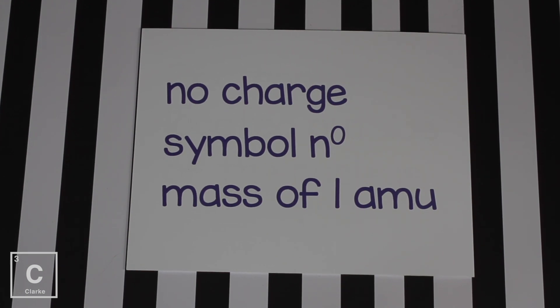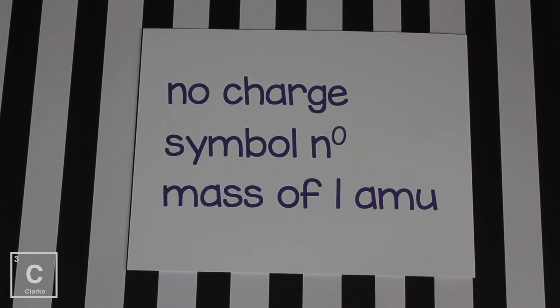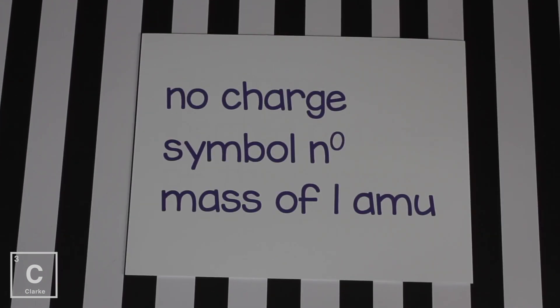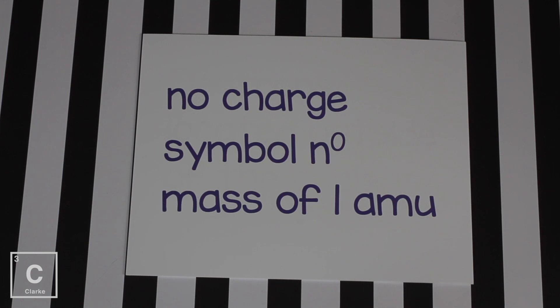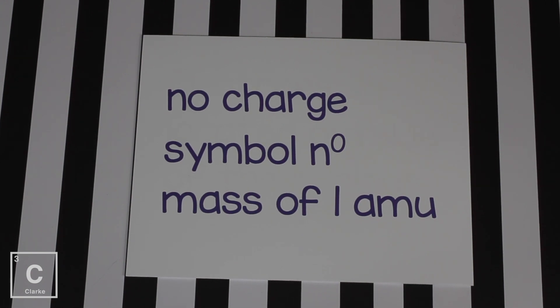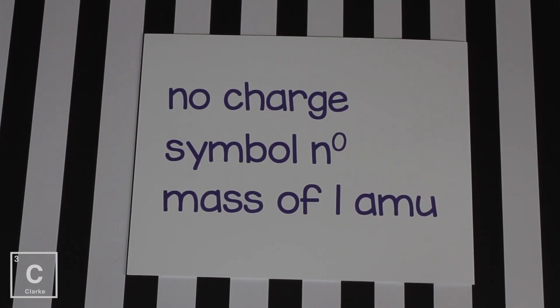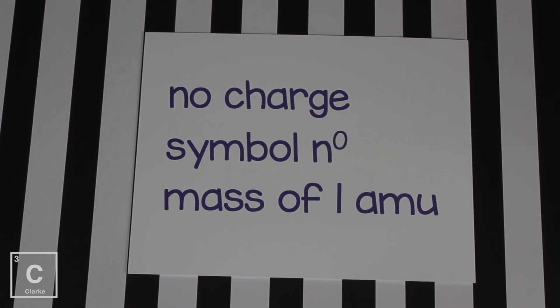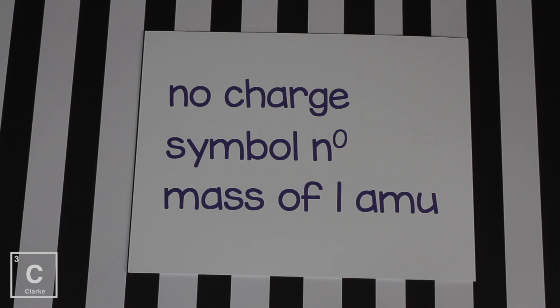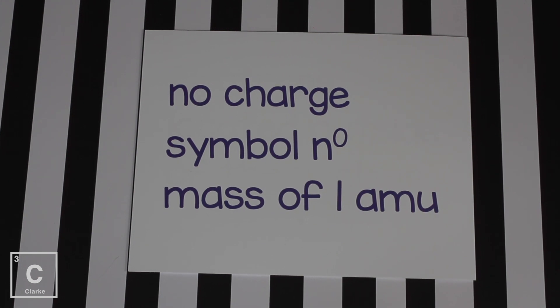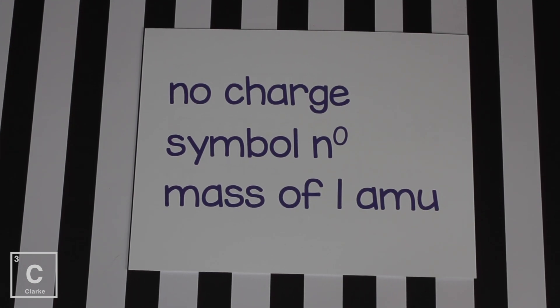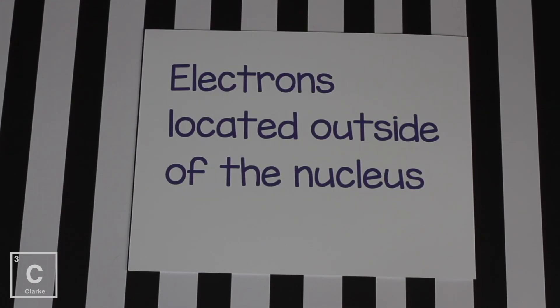We now know that protons and neutrons are made of even smaller particles — but that is a whole other video. The proton and the neutron do not have the exact same mass, but since it's so close we say that they both have a mass of one atomic mass unit.